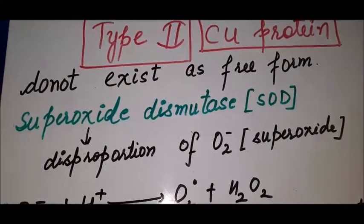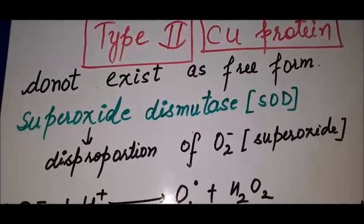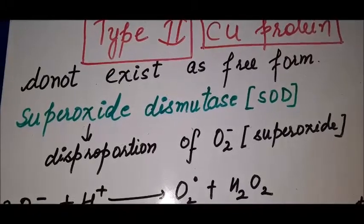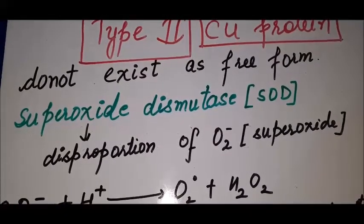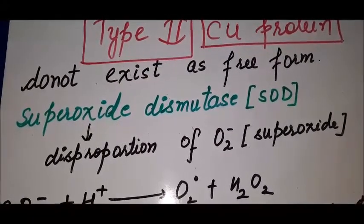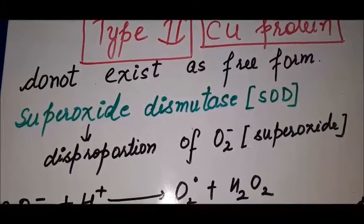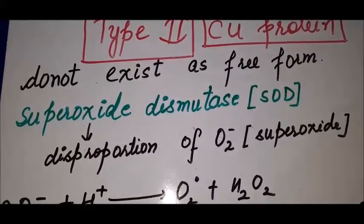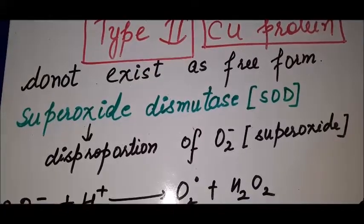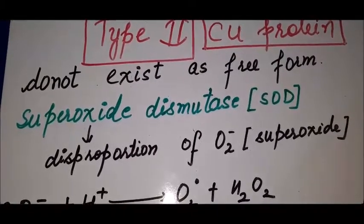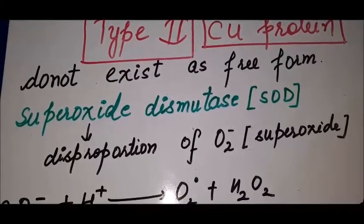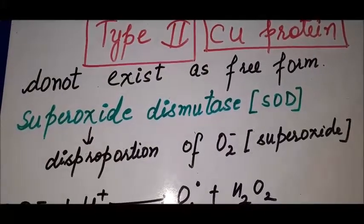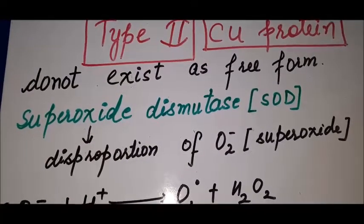Hi everyone, welcome back to my channel. Today we are back with another part of bioinorganic chemistry. We have already covered the copper protein type 1. Today we have to discuss the type 2 copper protein. There is also type 3, which is hemocyanin, already covered in previous videos. So let's start with the type 2 copper protein.